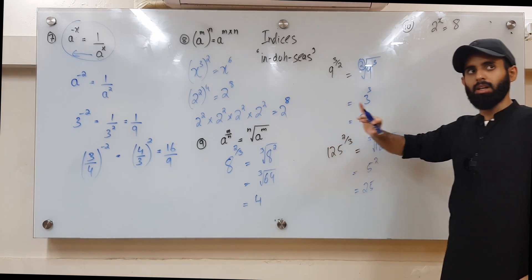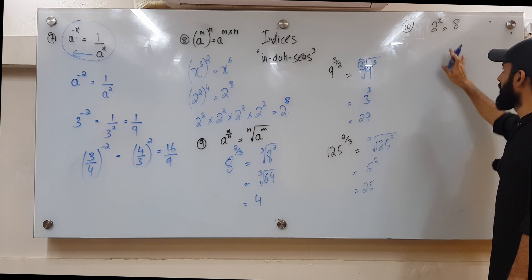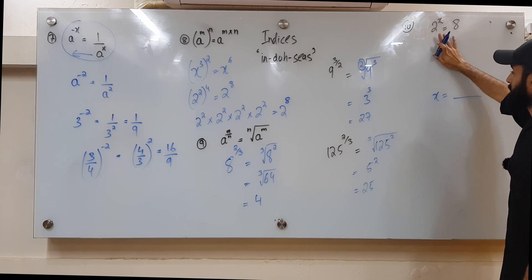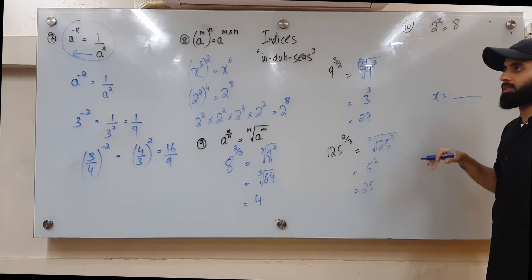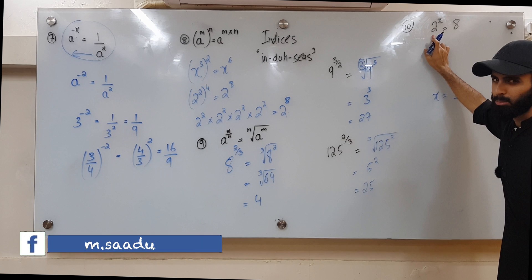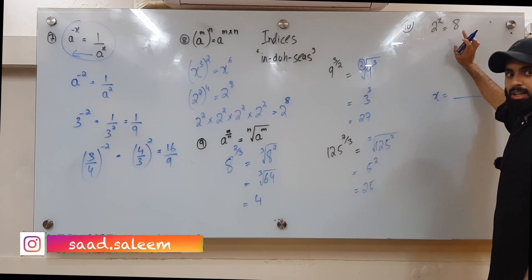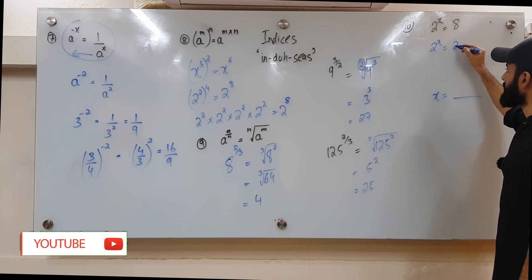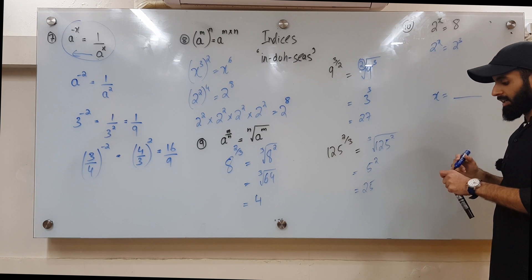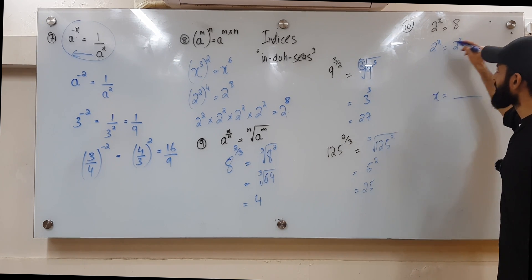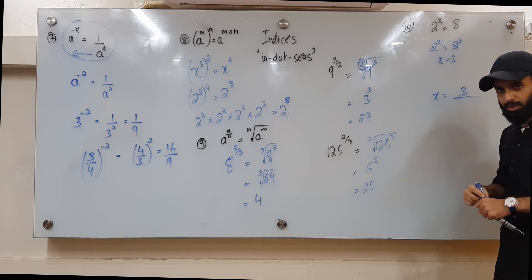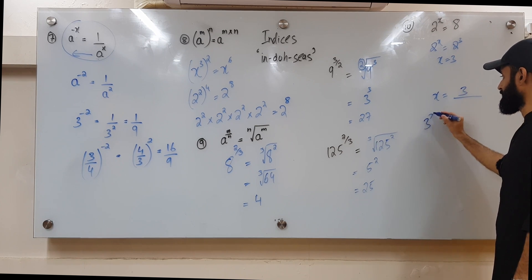Rule number ten is a procedure for solving equations like 2 to the power x equals 8. You try to make the bases the same on both sides. Writing 8 as 2 cubed makes both sides have base 2. Once the bases are the same, you ignore the bases and compare the powers — so x equals 3. A lot of students say the bases 'cancel', but we're simply comparing the powers.